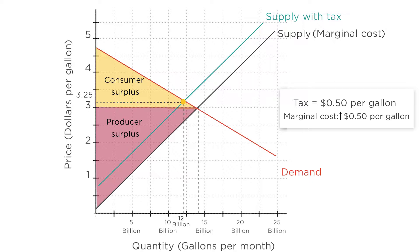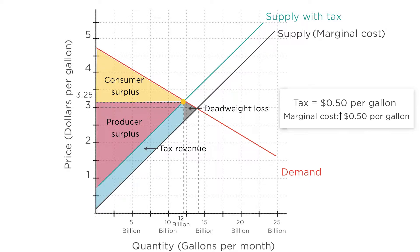What happens to social welfare? As we can see, consumer and producer surplus have both shrunk. The taxes created deadweight loss. There are units of gas for which consumers have a willingness to pay that exceeds the marginal cost of producing that unit before the tax. Without the tax, selling these units would produce surplus.